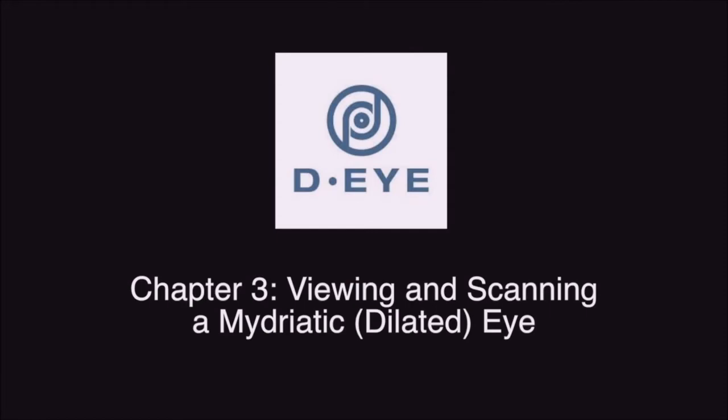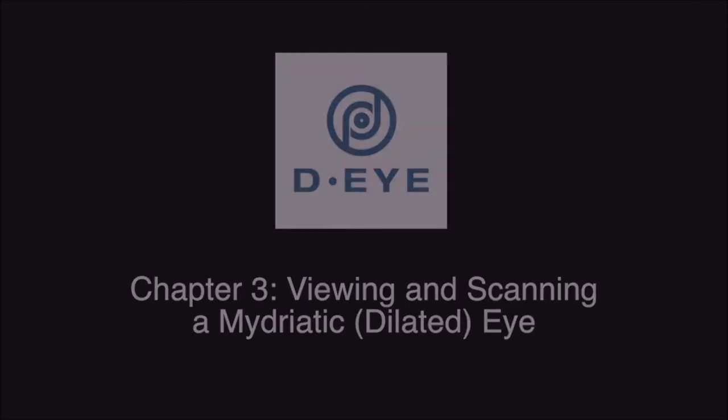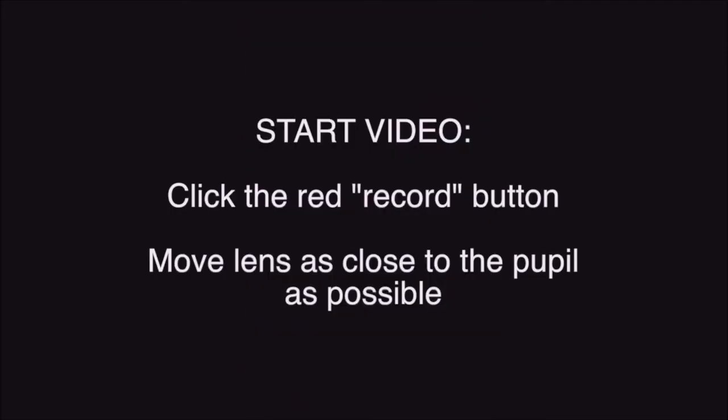Chapter 3: Viewing and Scanning the Mydriatic Eye. A dilated eye is easier to scan when learning how to use your DI. A dilated eye provides a wider field of view, about 20 degrees or more, so it is easier to aim and find the optic disc. There are important steps that need to be followed so that your smartphone camera will focus properly. The autofocus will begin to adjust as you move closer to the pupil. At about 6 inches from the eye, click the red button to start the video and move the lens as close to the pupil as possible — 1 cm.